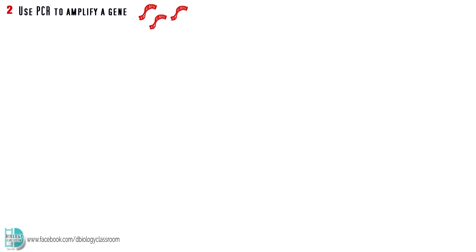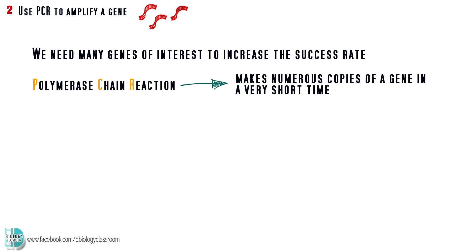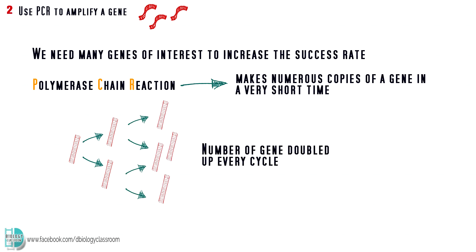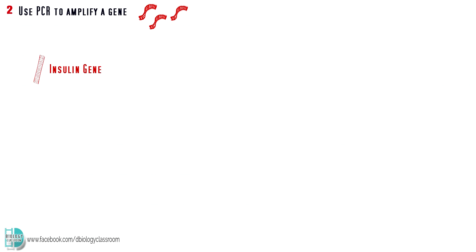The chance of a gene successfully inserted into a vector is pretty low. So, we want to have as many genes of interest as possible. PCR is a process that makes numerous copies of a gene in a very short time. It is like a photocopy machine. It can make millions of identical copies from a template in a short time. So, we can use this technique to amplify the number of the insulin gene.